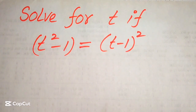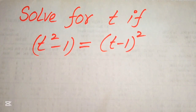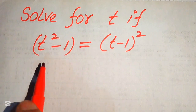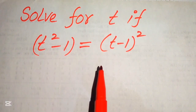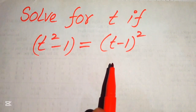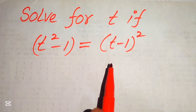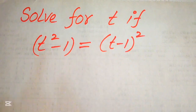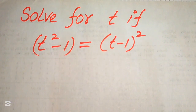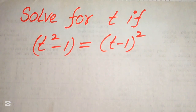Hello everyone, welcome to solve this math Olympiad algebra problem. Here we have t squared minus 1 equals t minus 1 whole square, and we solve this problem for all the values of t.